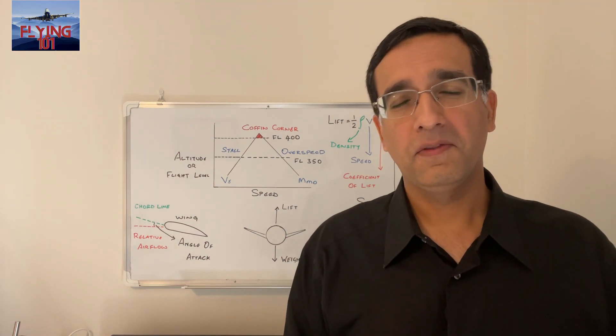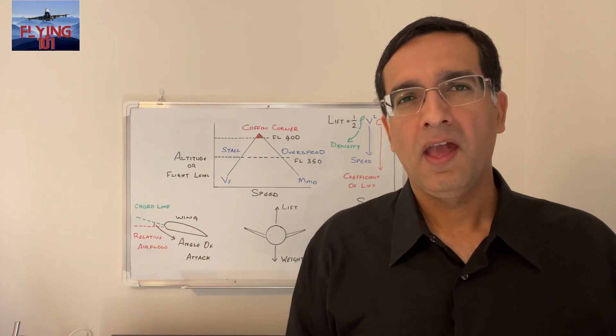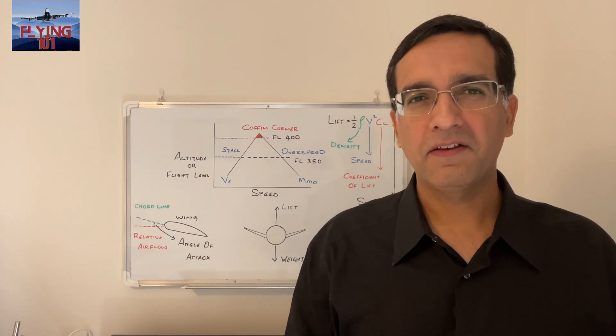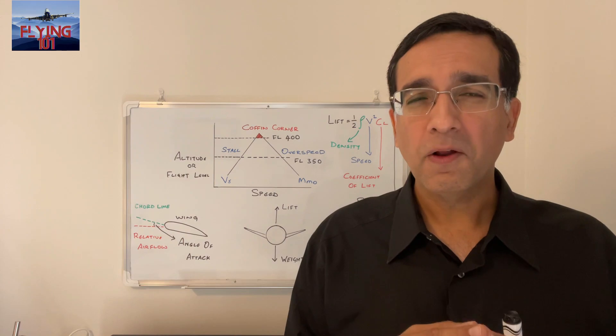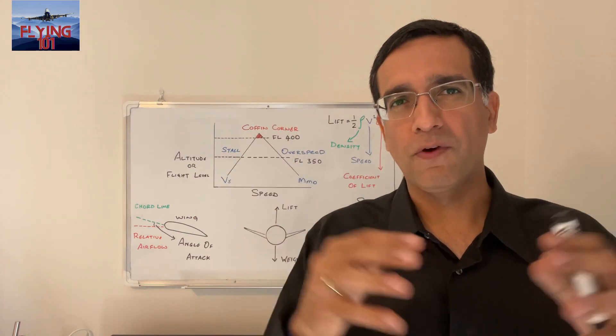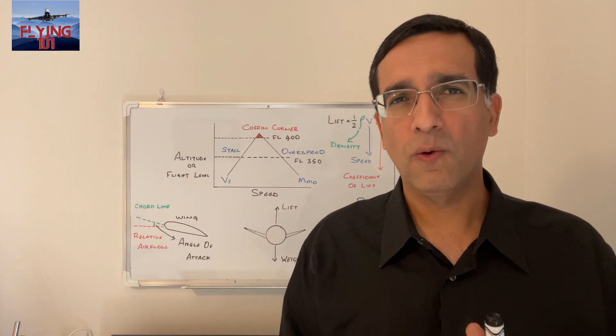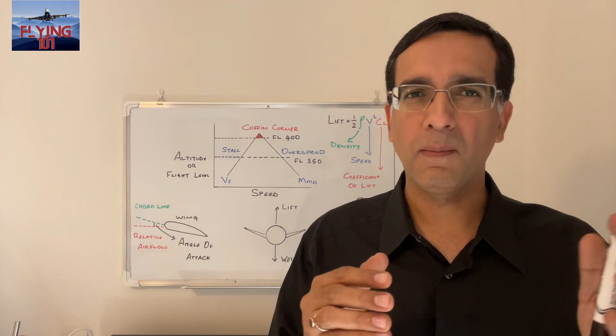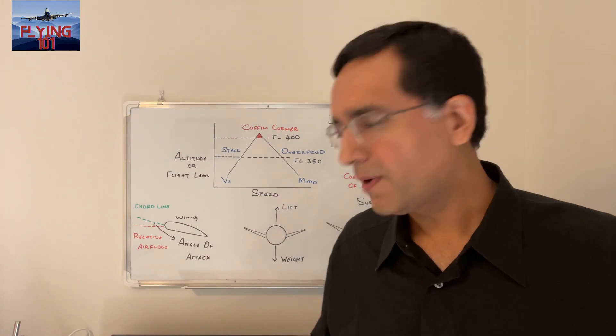Now let's circle back to the subject of coffin corner and see how the load factor fits into it. The coffin corner is a flight envelope boundary where a high incidence stall intersects with the critical Mach number. What do we mean by this?